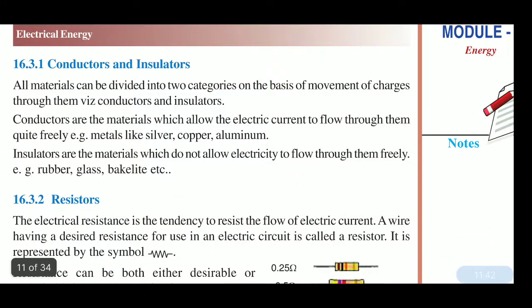Now section 16.3.1 — conductors and insulators. All materials can be divided into two categories on the basis of movement of charges through them: conductors and insulators. Conductors are materials which allow electric current to flow through them freely, while insulators do not allow electricity to flow through them freely — for example, rubber, glass, and bakelite.